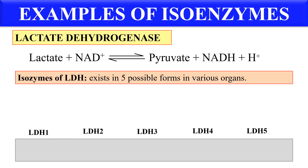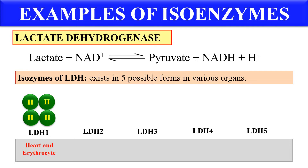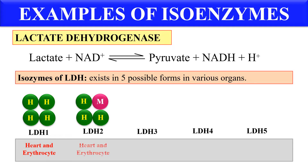The LDH enzyme has 2 monomer units which are repeated: H and M. LDH1 contains 4 subunits, all of H type — that is H4 — and it is present in heart and erythrocytes. In the case of LDH2, it has the configuration H3M, meaning it has 3 H molecules and 1 M molecule, and it is also present in heart and erythrocytes.